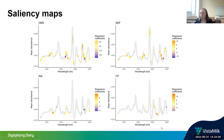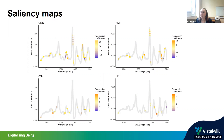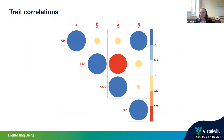For crude protein, a very small number of wavelengths was selected — only 12 wavelengths. For NDF, 39 wavelengths were selected by the model. For OMD, 81 wavelengths were selected, which we pretty well expected because OMD is the most complex trait out of all the traits under analysis.